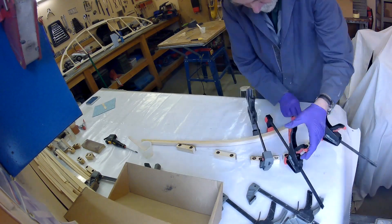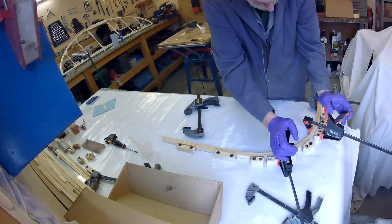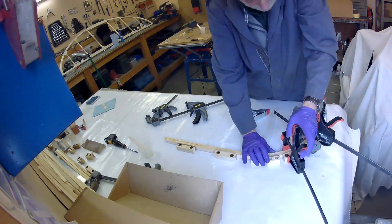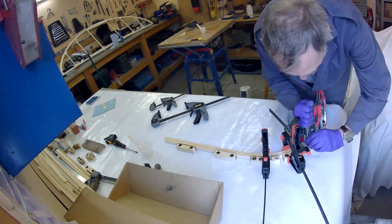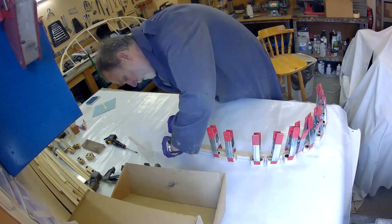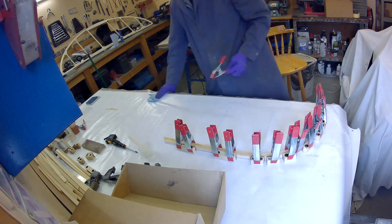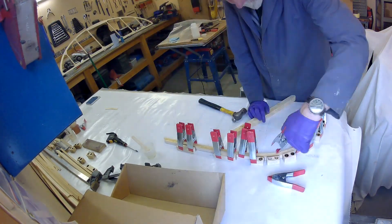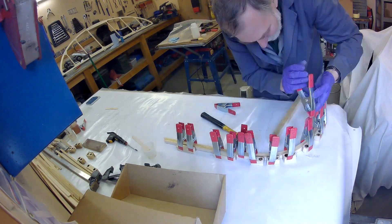Incrementally pulling the laminations into the form, not clamping too tightly. We don't want to expel all the glue but we do need to hold into that radius which is going to try and straighten out. Here I'm just tapping down with the hammer to make sure the laminations are the same height.